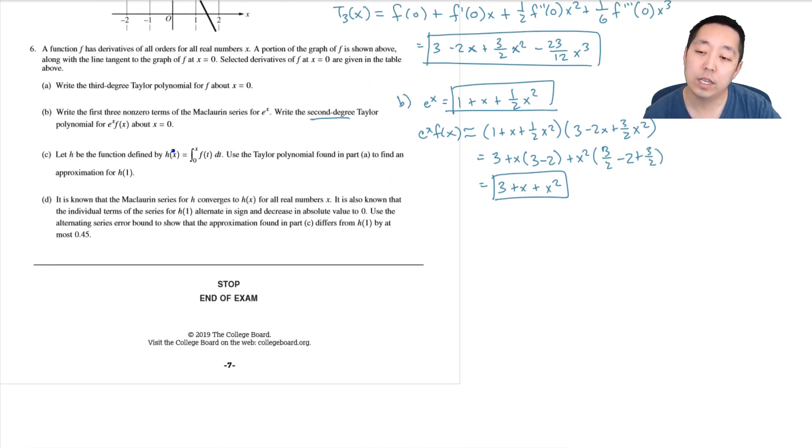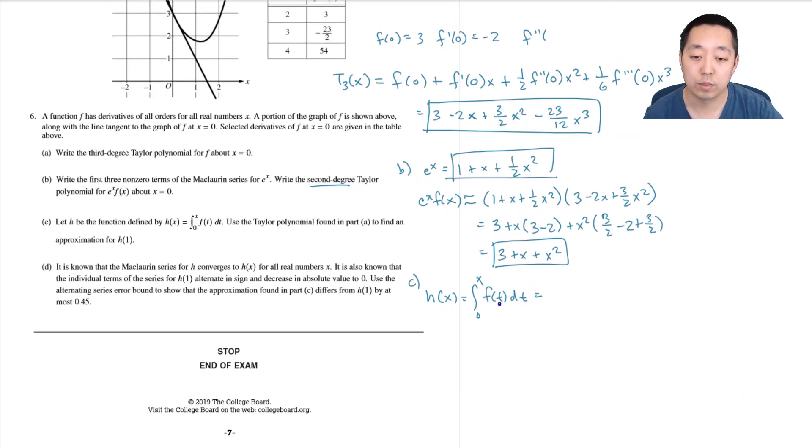Part C: Let h be the function defined by h(x) equals the integral from 0 to x of f(t)dt. Using the Taylor polynomial found in part A, find an approximation for h(1).